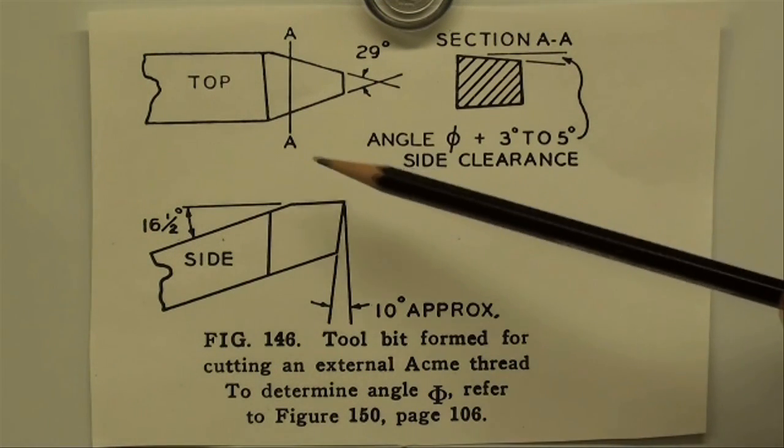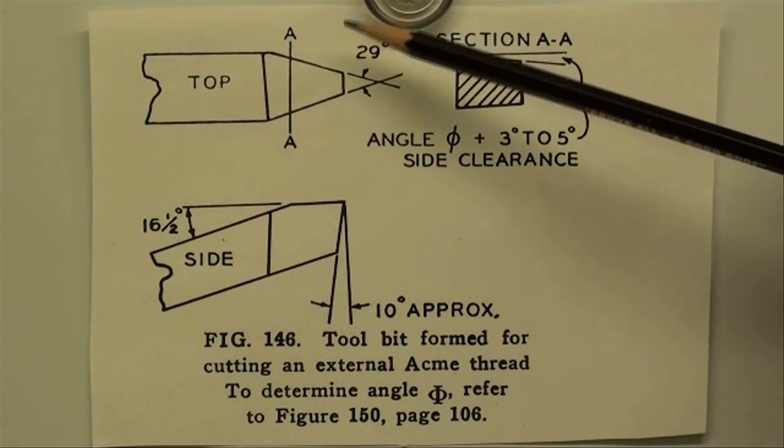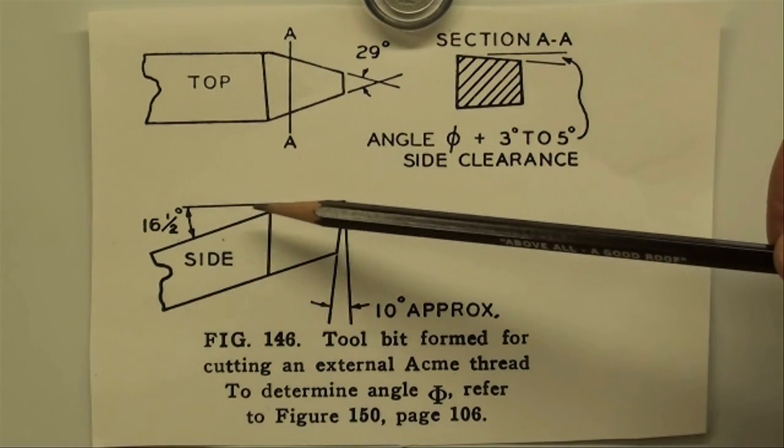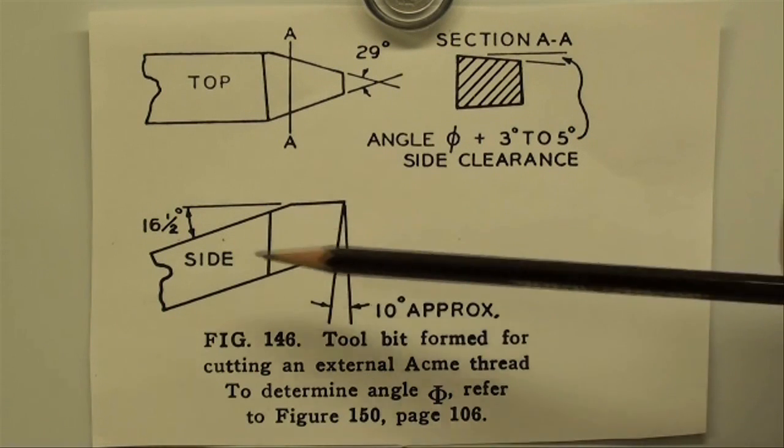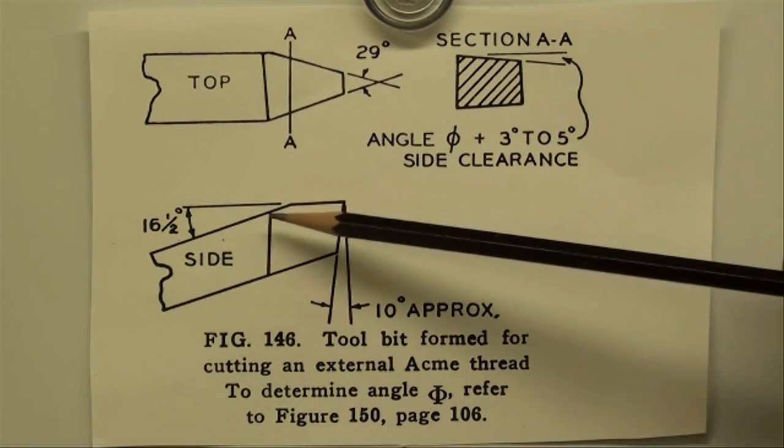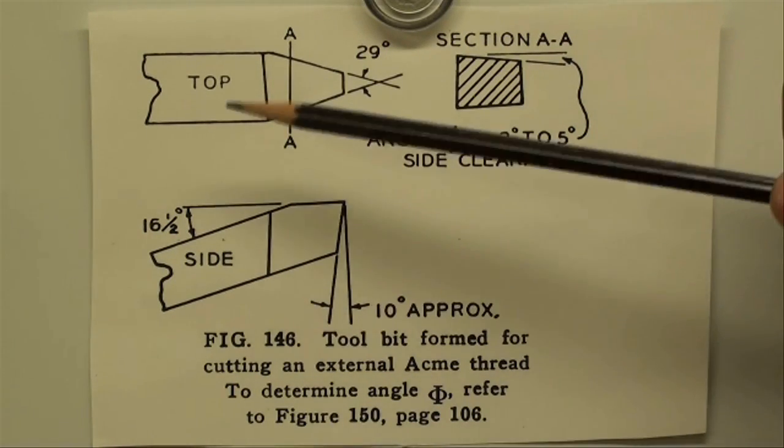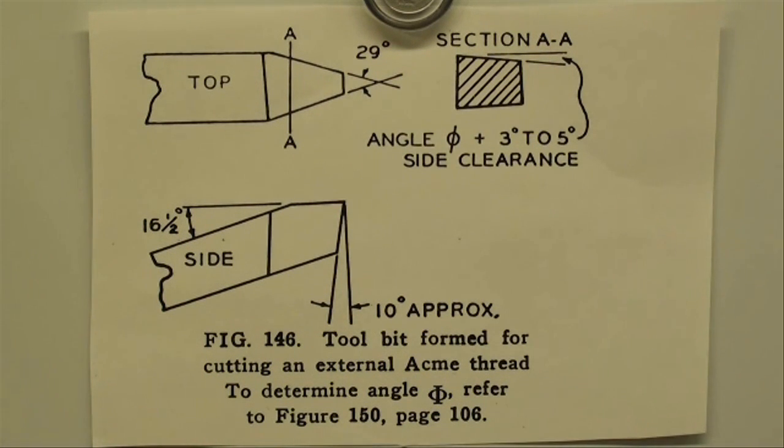Your tool bit needs to be ground at 29 degrees. I'm going to be using a straight tool holder that does not require the 16 and a half degree back rake, but if you're holding this in a standard Armstrong type tool holder that presents the tool to the work at 16 and a half degrees, you need to grind that top rake on there. This is the side view, and this is the top view of what the tool looks like. This may be the biggest part of the job for you, grinding a tool that is the right form, because this is a forming tool.